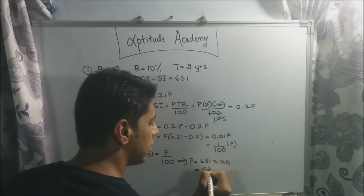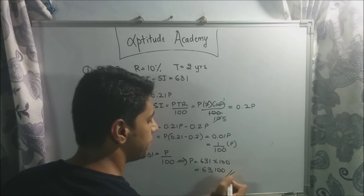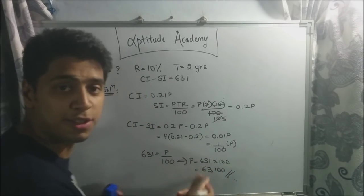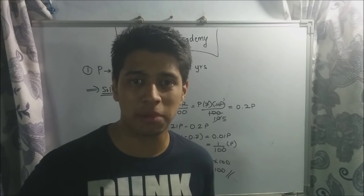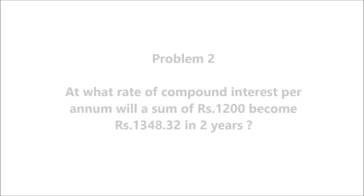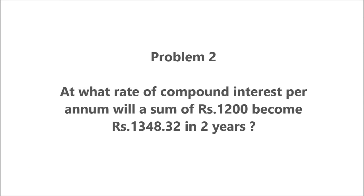Therefore P = 631 × 100 = Rs. 63,100. That is your final answer.